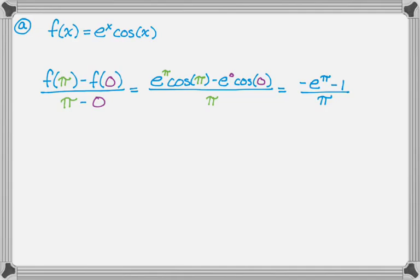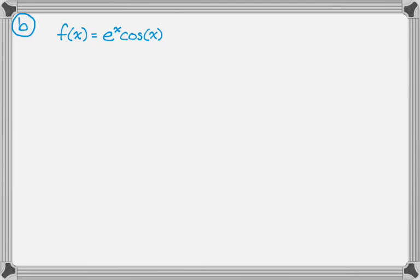So in part b, we are asked to find the slope of the tangent at 3 pi over 2. So first we're going to need the derivative because that tells us the slope of the tangent.